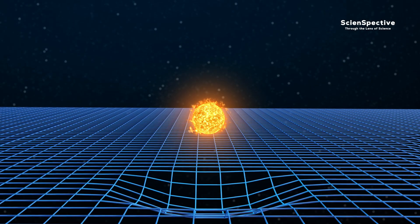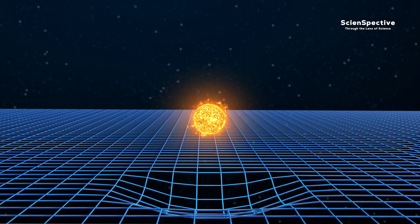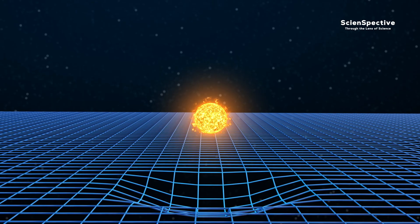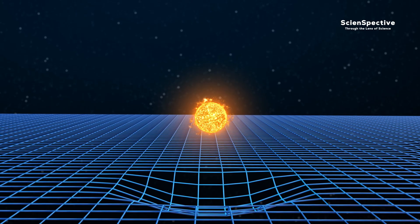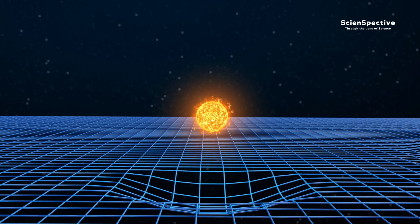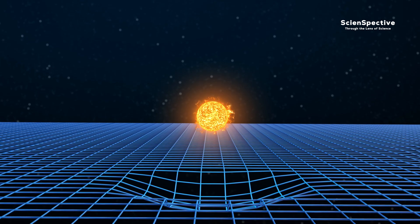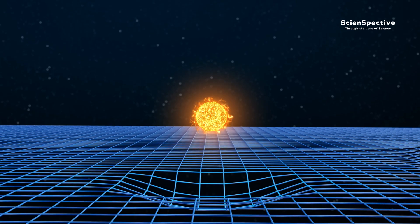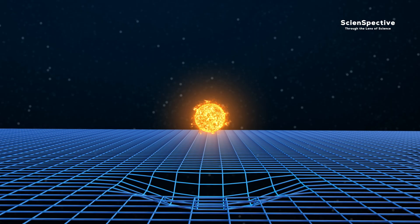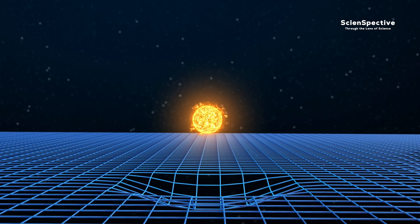Less mass means weaker gravity. This results in lower inward pressure, lower temperature, and thus milder fusion. Smaller stars can survive for billions of years. An example is our sun, which will run out of hydrogen in roughly five billion years.